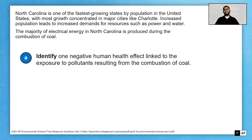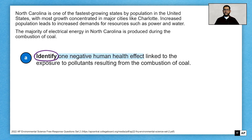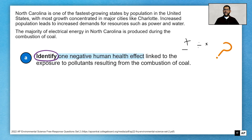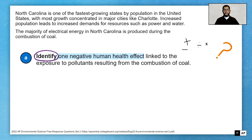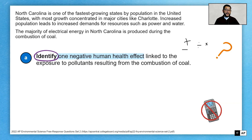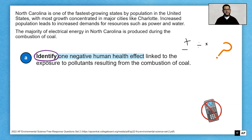Now this is supposed to be a math question, but you'll notice the first one is to identify one negative human health impact. You're probably asking yourself, where's the math — the add, subtract, multiply, divide? Well here's the catch: every one of these FRQs has some math, but there's always non-math portions. So in this part you don't need a calculator, but you will need it in other portions of this question.